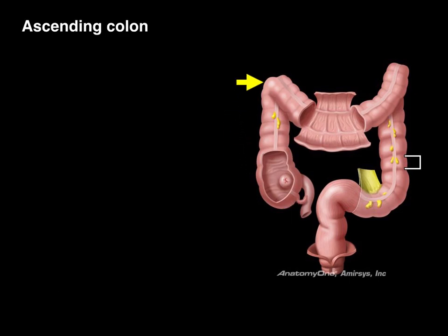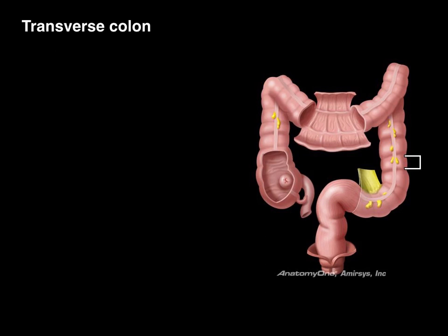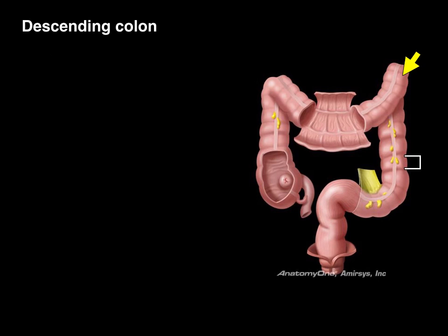The ascending colon ascends in the right part of the abdomen, and at the very top is the hepatic flexure — also called the right colic flexure — because the liver is right above it. The transverse colon arises from the right colic flexure and courses over to the splenic flexure, also known as the left colic flexure. Then we have the descending colon from the left colic flexure all the way down to the bottom of the left lower quadrant. You'll notice the characteristic little pouches called haustra, formed by the longitudinal tenia coli muscle, which give a characteristic appearance to the large intestine.